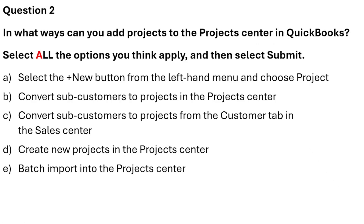Question 2: In what ways can you add projects to the Projects Center in QuickBooks? There are five options: Option A — select the New button from the left-hand menu and choose Project; Option B — convert sub-customers to projects; Option C — convert sub-customers to projects from the Customer tab in the Sales Center; Option D — create new projects in the Project Center.